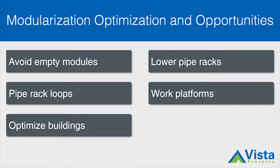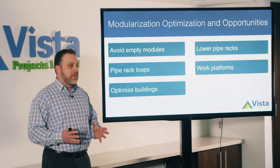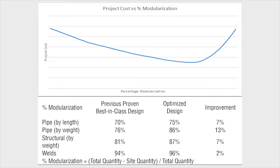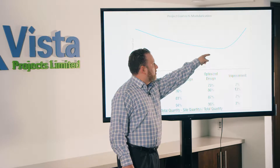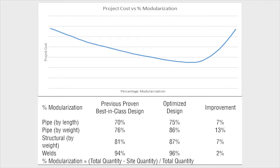Through proper planning, Vista has identified opportunities to optimize modularization. We look to avoid shipping empty modules. We've implemented pipe rack loop modules into the design, optimized our buildings by reducing height and shrinking footprint, lowered our pipe racks, and added work platforms to our modules to help with bolt-up. As you can see with this chart, too little modularization and costs go up. We want to hit the sweet spot — if we over-modularize, costs go through the roof. Vista believes in the right amount of modularization, fit for purpose for the job.